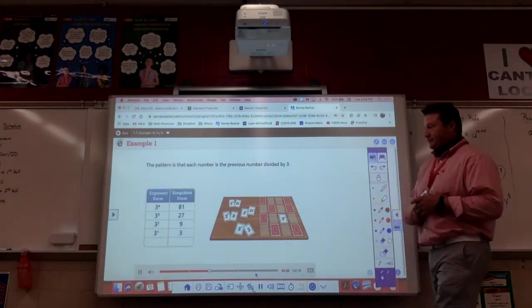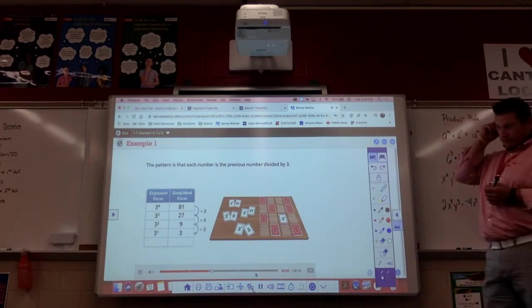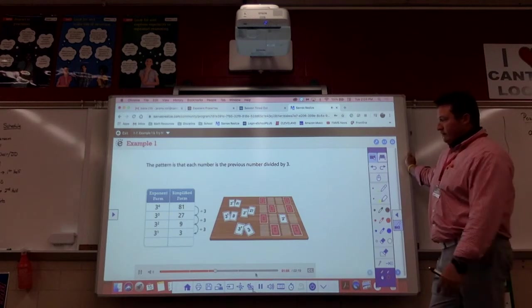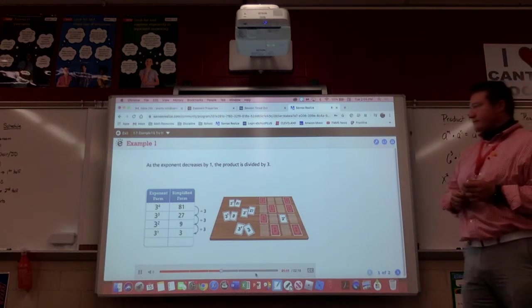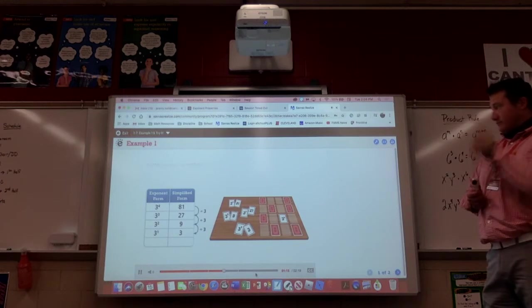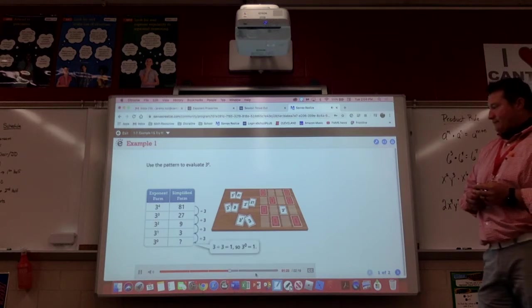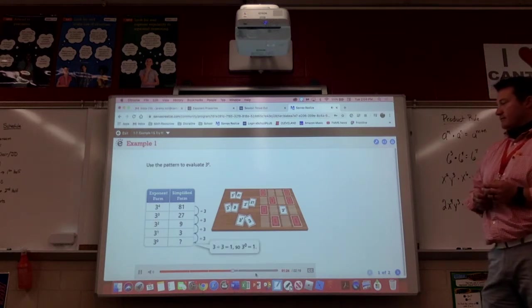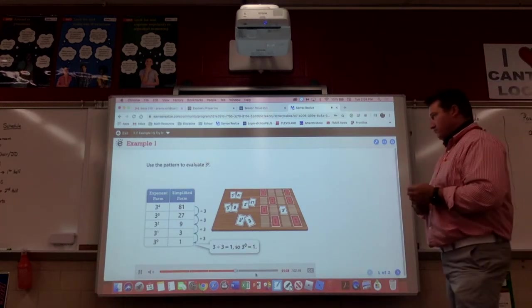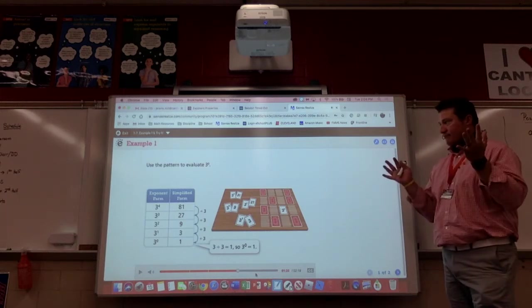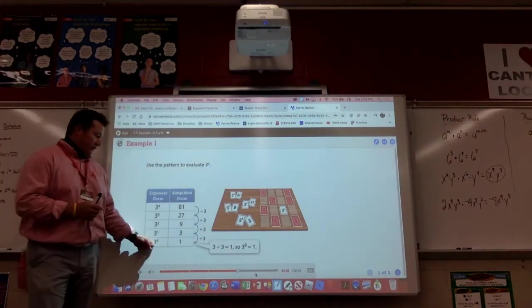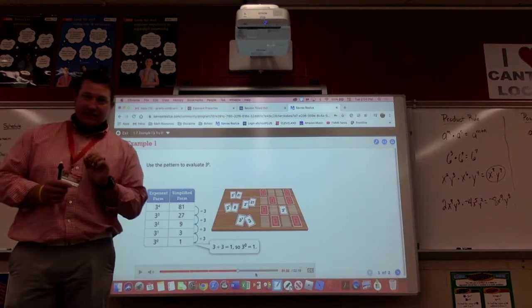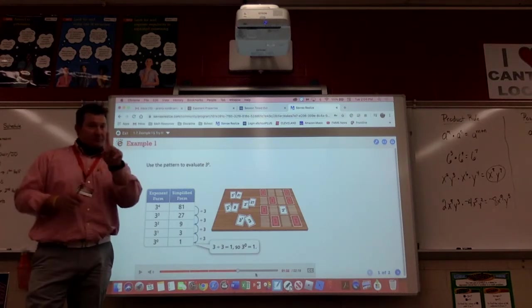Let's carry on and see what else they have to say. The pattern is that each number is the previous number divided by 3, or each number is one-third the previous number. As the exponent decreases by 1, the product is divided by 3. We can use the pattern to find 3 to the power of 0. 3 divided by 3 equals 1. So 3 to the power of 0 is equal to 1. The card Markela needs is 1. Fantastic. So guys, there's what we're all about today. Anything to the 0 power - in this case, we're using the number 3, the base of 3. Anything to the 0 power is not 0, as we would think. It's actually 1.